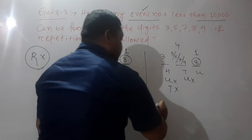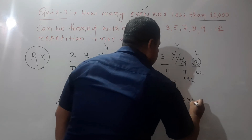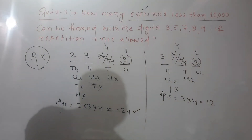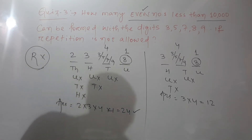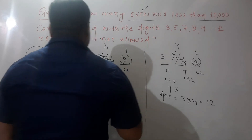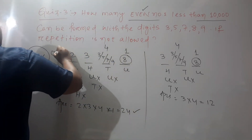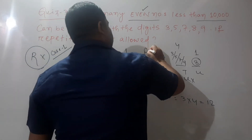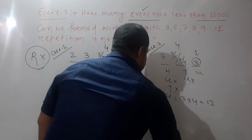So for three-digit even numbers, the answer is 3 × 4 × 1 = 12. That is Case 2. Now moving to Case 3.